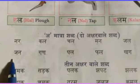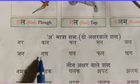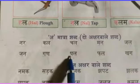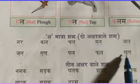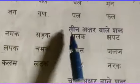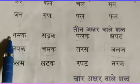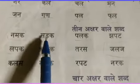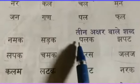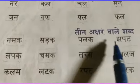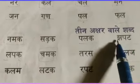Jal, jana-jan, guna-gun, pele-pal, fala-fal. Teen aksharwale sabda: namak, namak, shadak, shadak, palak, palak, jabat, jabat.